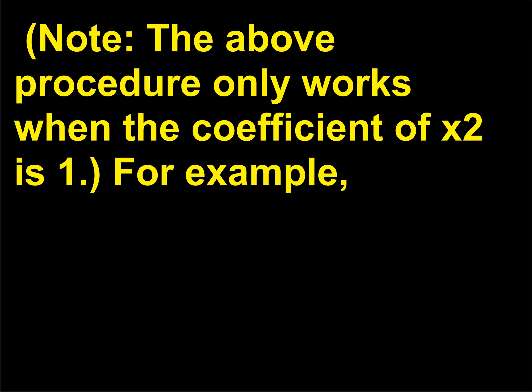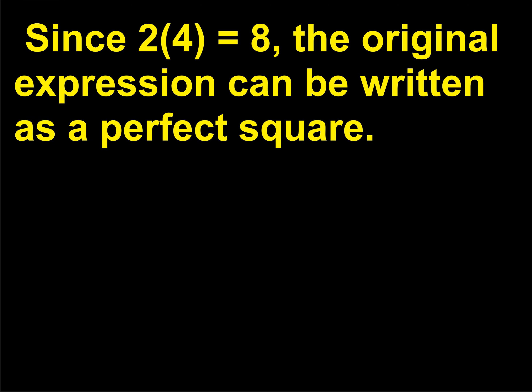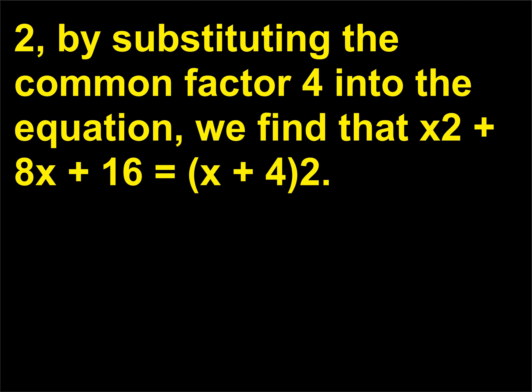For example, in the equation x² + 8x + 16, the constant term 16 is already a perfect square — the square root of 16 is 4. Since 2 × 4 equals 8, the original expression can be written as a perfect square. Because we know x² + 2ax + a² is a perfect square and equals (x + a)², by substituting the common factor 4 into the equation, we find that x² + 8x + 16 equals (x + 4)².